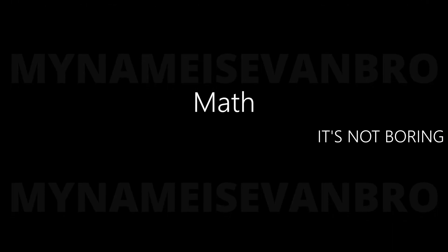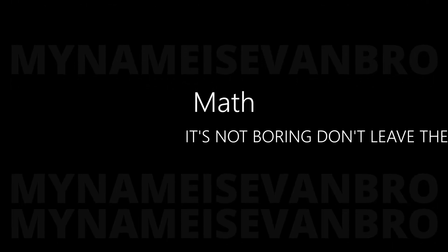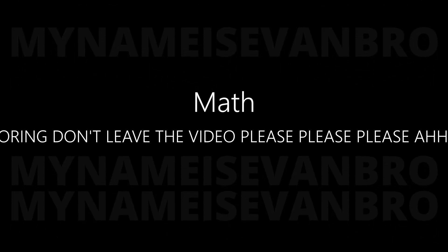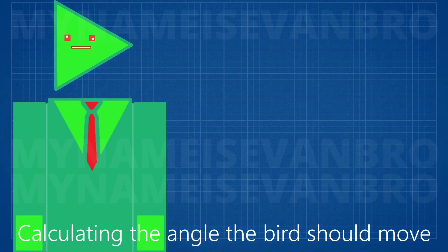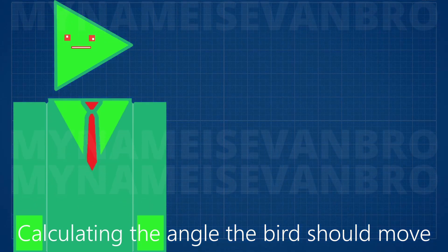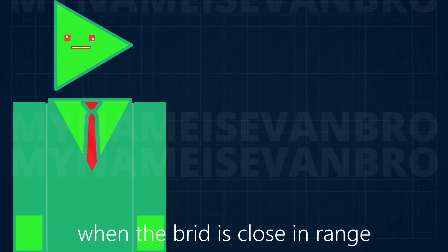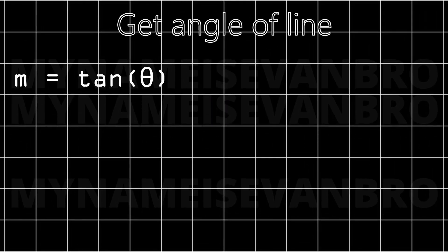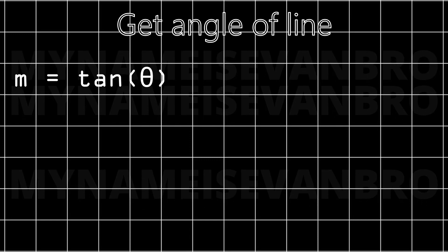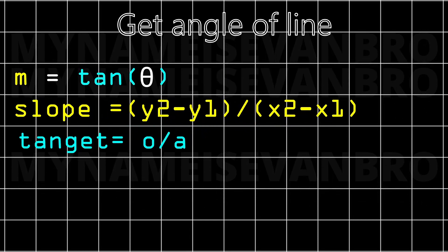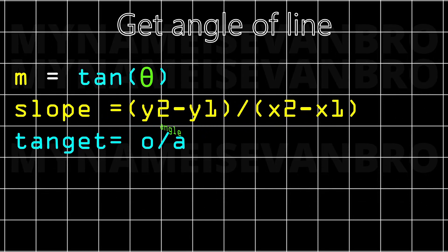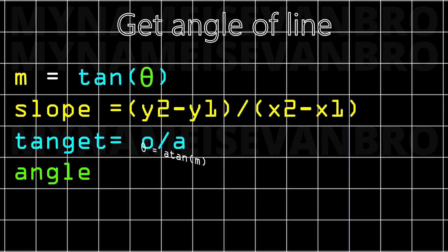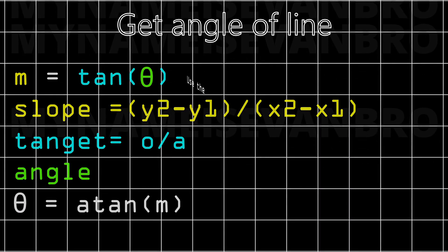This explanation is short, so I'm going to explain some of the math used. Calculating the angle the birds should move when the bird is close in range of the mouse is easy. To get the angle, you can reverse the formula: M is equal to the tangent of theta, where M is the slope, tan is the tangent, and theta is the angle. Reversing this gives you theta is equal to the arctangent of M.